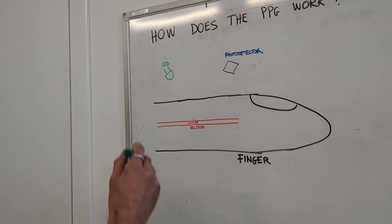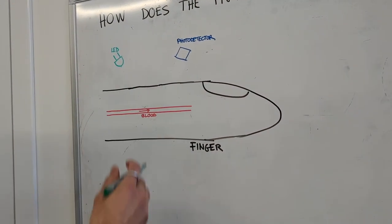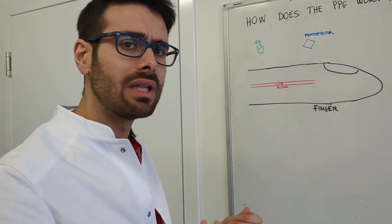First of all, we start with an optoelectronic component, an LED, which is shining light. Suppose this light is green.